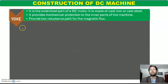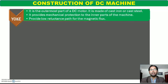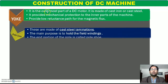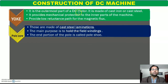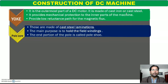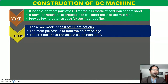Let's discuss one by one. सबसे पहला part है yoke. DC machine का outermost periphery है — यानि जो बाहरी part होता है उसको हम yoke बोलते हैं. वो या तो cast iron से बना होता है या cast steel से बना होता है. Its size and quality depends upon the power rating. Power rating बहुत ज़्यादा होगी तो इसे हम segmented form में बनाते हैं और bolt से tight करते हैं. अगर power rating low है तो single circuit हम design करते हैं. It provides mechanical protection to the inner parts of the machine.